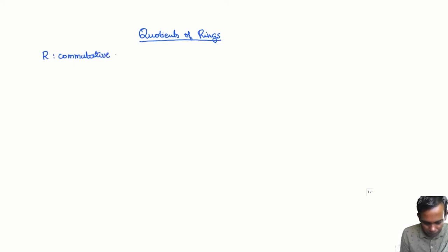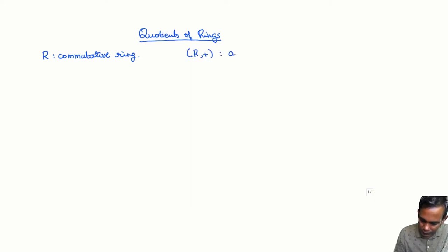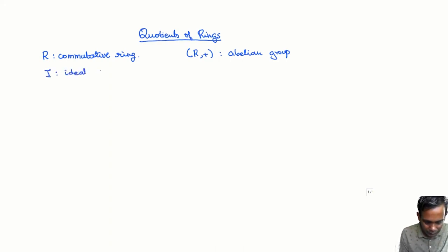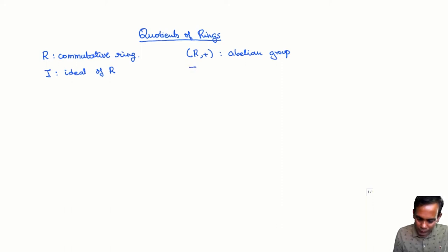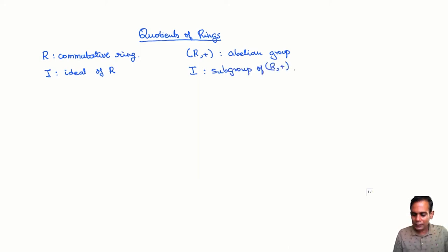Suppose R is a commutative ring. Remember when R is a ring, R with plus is an abelian group. What you can do is take the quotient of R by an ideal. So let I be an ideal of R. An ideal is a subset of R which is a subgroup of (R, +), but also has the property that if you take an element of I and multiply it by any element of the ring, the product is again an element of I.